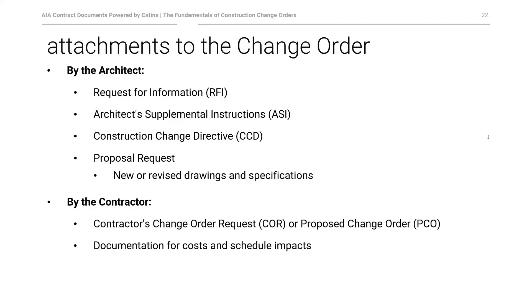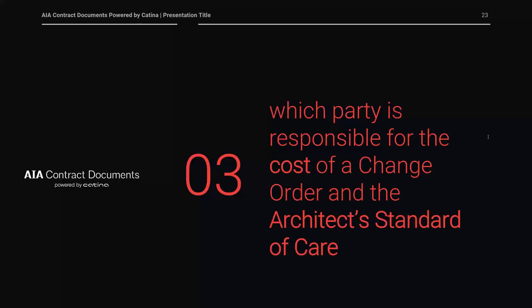To finalize, compile all attachments and issue with the change order. It's common to print in triplicate — one original for each signatory. The architect typically signs first, followed by the contractor, then by the owner. Alternatively, if the parties agree, all can be handled electronically in PDF form and signed electronically. We'll now turn to how responsibility for the change amongst the parties may be determined.